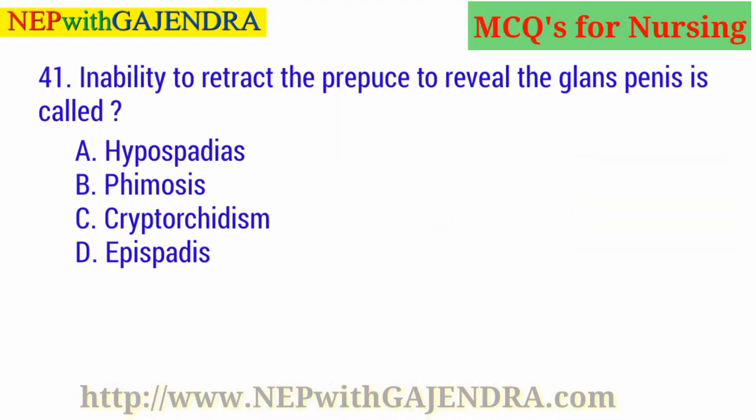Inability to retract the prepuce to reveal the glans penis is called: A. Hypospadias. B. Phimosis. C. Cryptorchidism. D. Epispadias. The right answer is B: Phimosis.